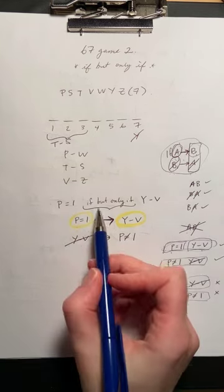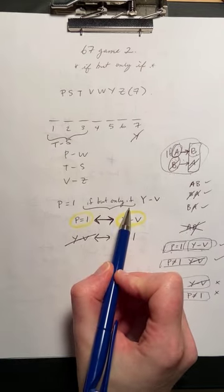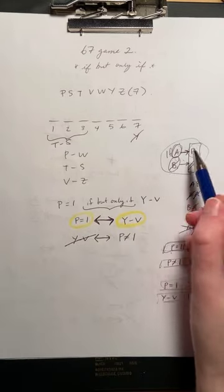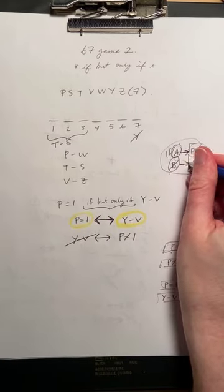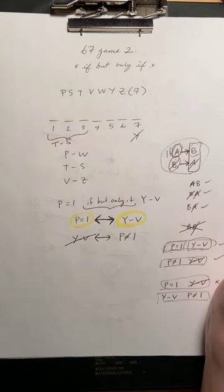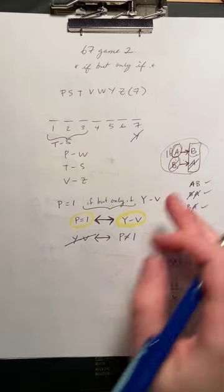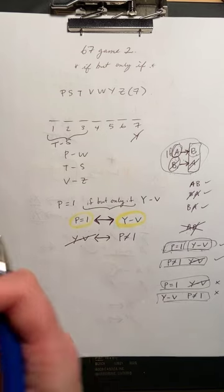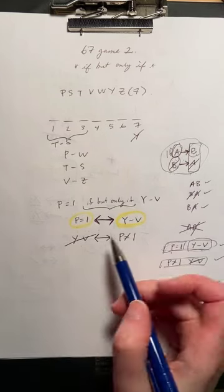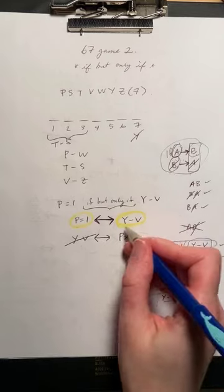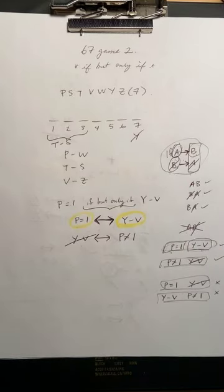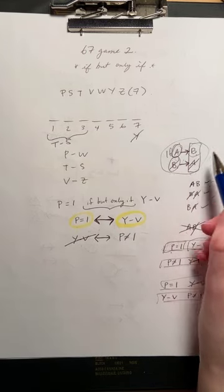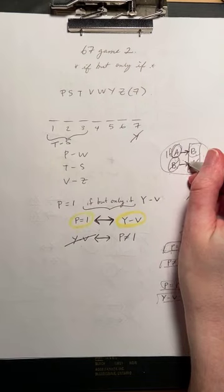Because then what you're going to do is you're going to miss out on extra limitations that the rule is giving you. So you're missing out on potential deductions, potential triggers that you wouldn't have with an arrow just going one direction.